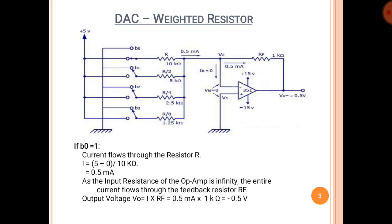Let us see the different conditions. First, if B0 = 1 — B0 is the least significant bit — the current flows through resistor R. The value of current is (5 − 0) / 10kΩ, where 5V is the supply, 0V is the voltage at terminal V2, giving a current of 0.5mA. As the input resistance of the op-amp is infinity, the entire current flows through the feedback resistor RF. The output voltage V0 = 0.5mA × 1kΩ = −0.5V when B0 = 1.